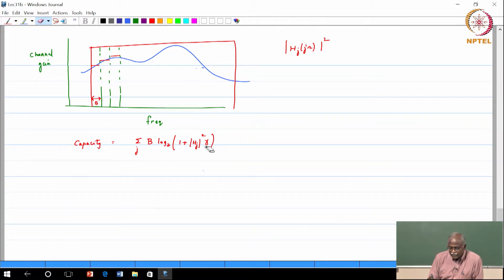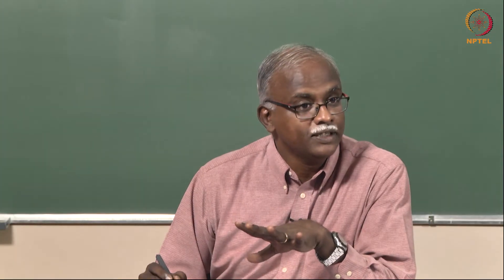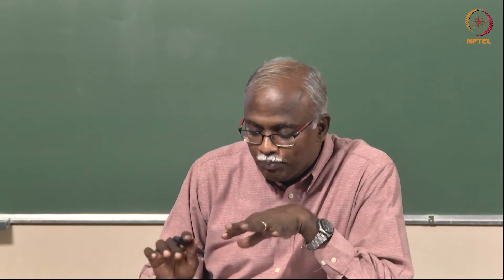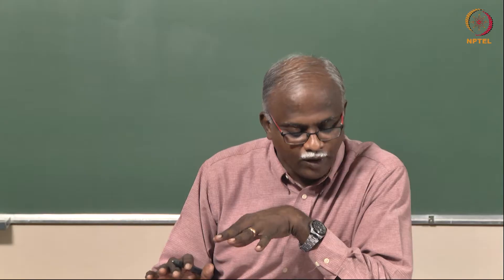So this is the - now in the earlier case there was a F gamma coming because there is a probability distribution. Does that need to come here also? No, there is nothing probabilistic here. There are some n channels. So basically there is no PDF actually involved.